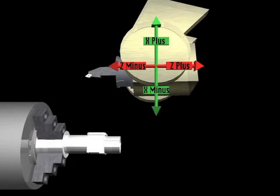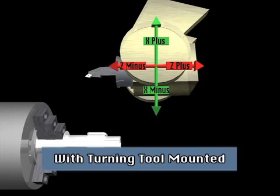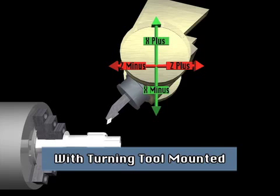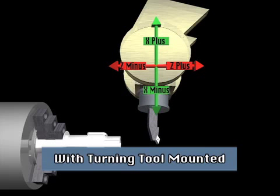The direction of each axis depends on the type of tool in the tool spindle. With this turning tool mounted and the B-axis at 0 degrees, the X-plus direction is up and X-minus is down. The Z-plus direction is away from the spindle and Z-minus is toward the spindle. With the B-axis at 90 degrees, you see that the axis directions remain the same.